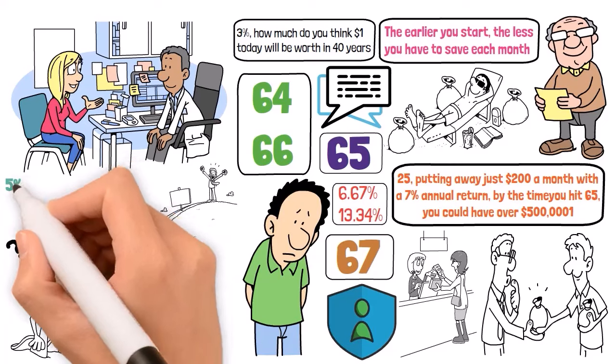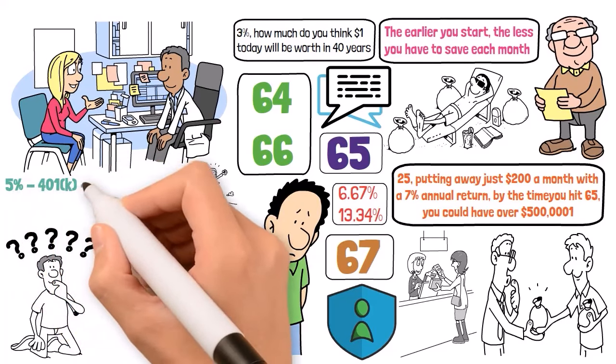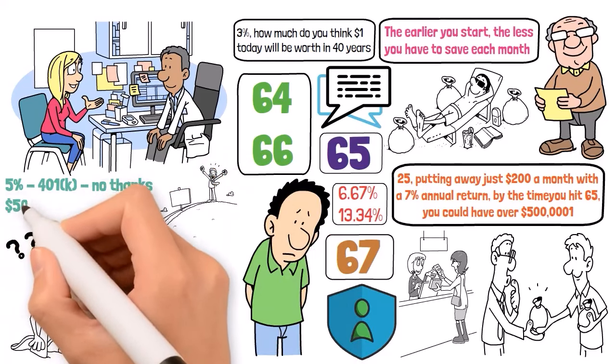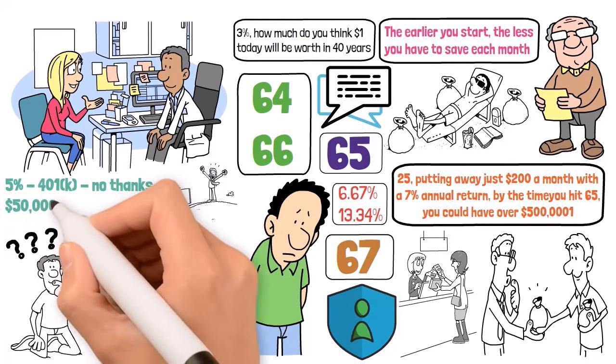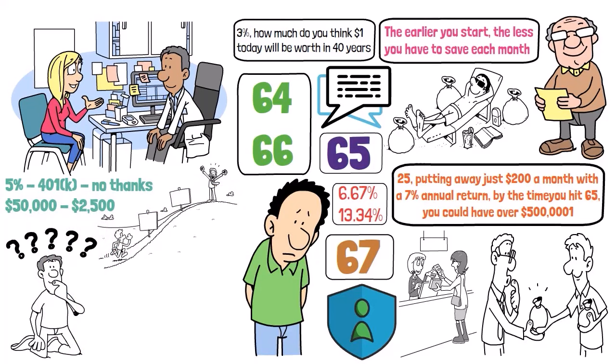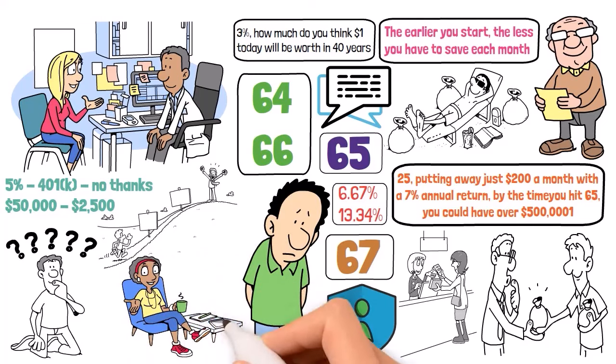Imagine this. Your company offers a 5% match on your 401k. If you're not contributing at least that much, you're saying no thanks to free money. Let's say you earn $50,000 a year. That's $2,500 you could be adding to your retirement pot annually without lifting a finger. Remember folks, retirement benefits are part of your compensation. Ignoring them is like turning down a portion of your paycheck. So take action and claim yours.